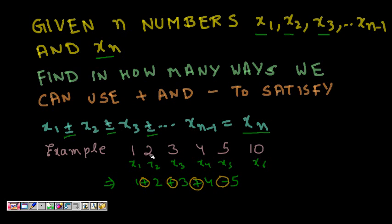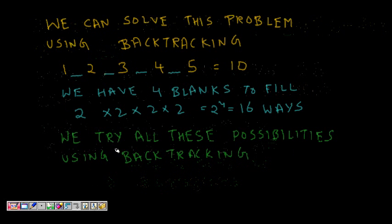Another example: given 1, 2, 3, 4, 5, and 10. If we do 1+2+3+4-5, that gives us 10-5=5... actually, 1+2+3+4=10, 10-5=5. We need to find such combinations and count all valid ways. This can be solved using backtracking.